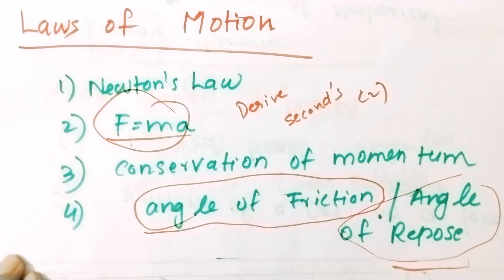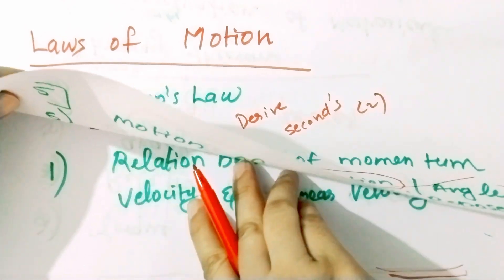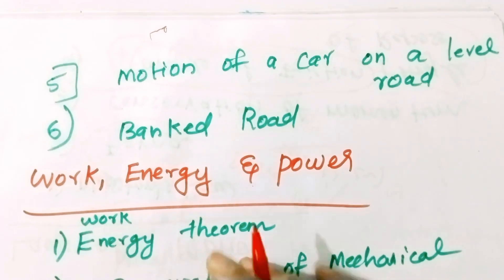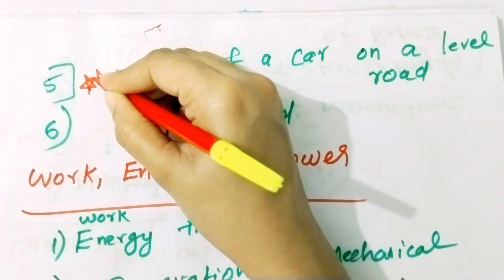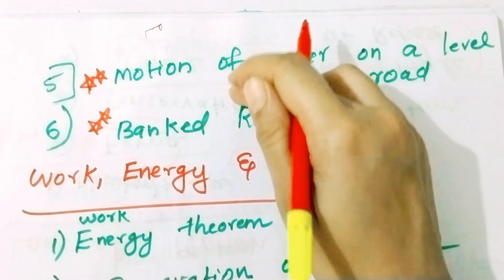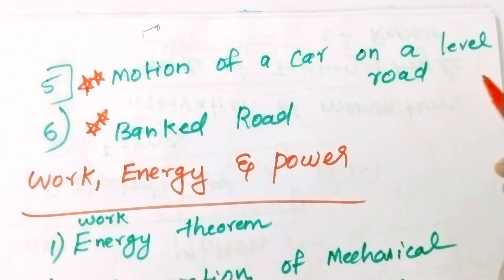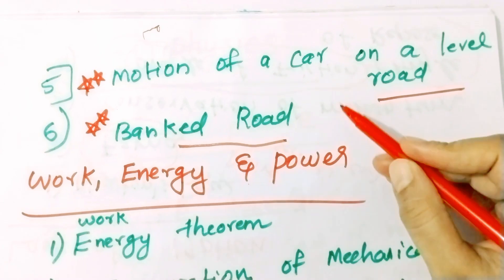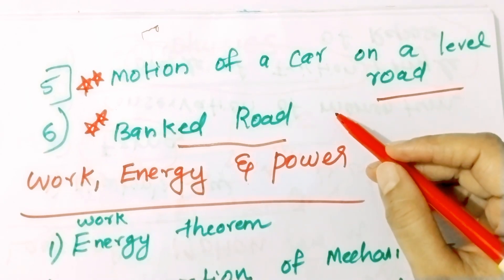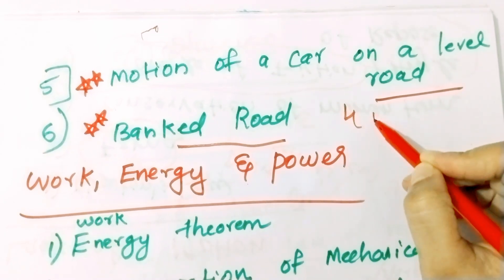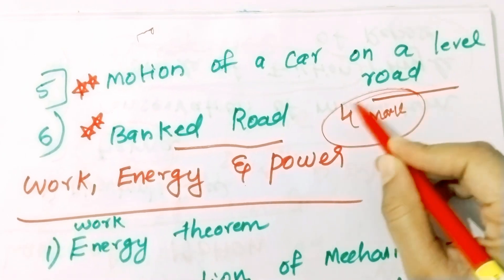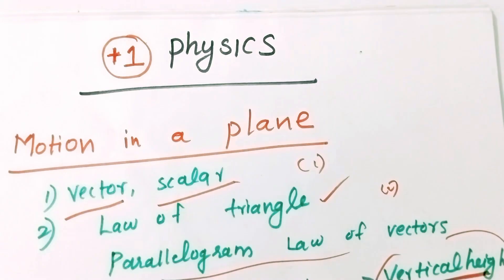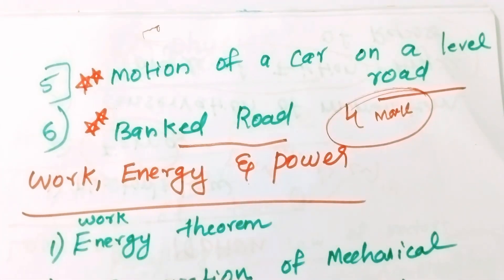Projectile motion is the most important thing. The most important derivations are motion of a car on a level road and motion of a car on a banked road. Banked road is very important — this is a 3 or 4 mark derivation. Make sure to give it a star as it is highly important.